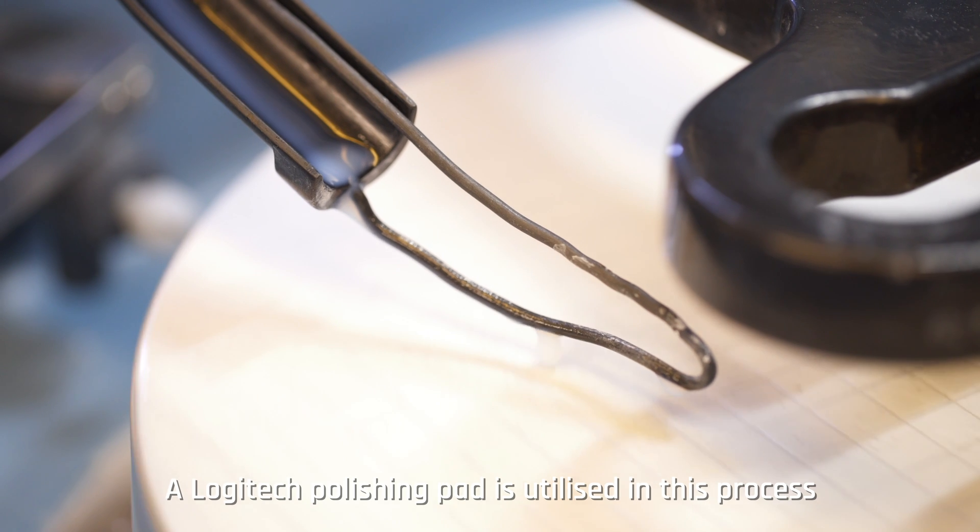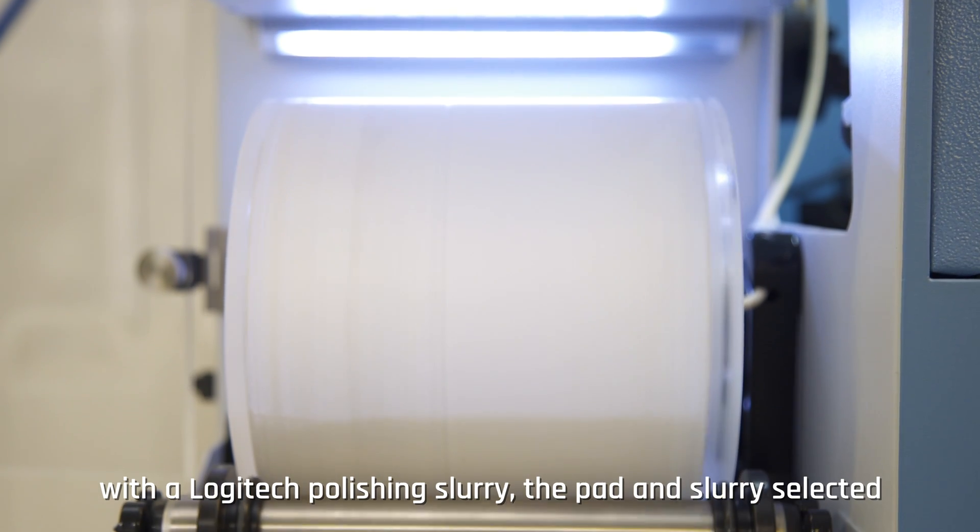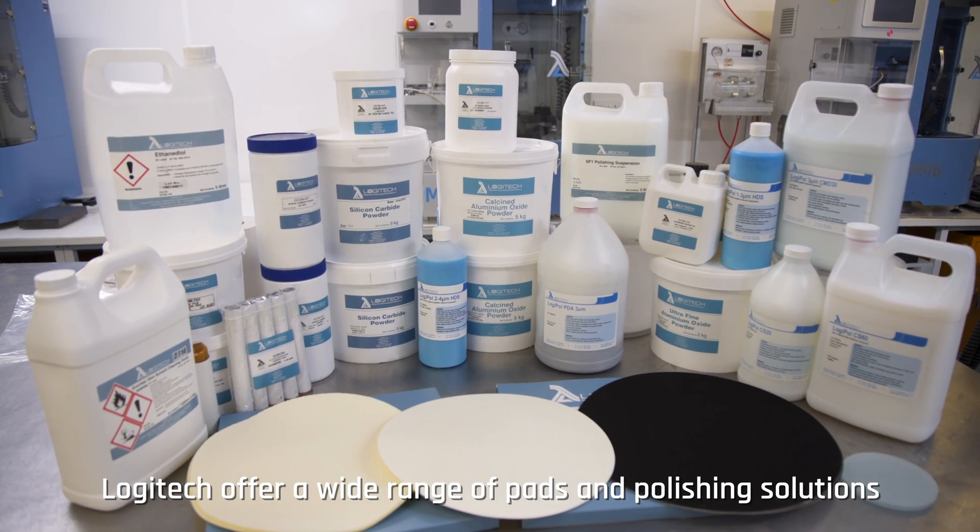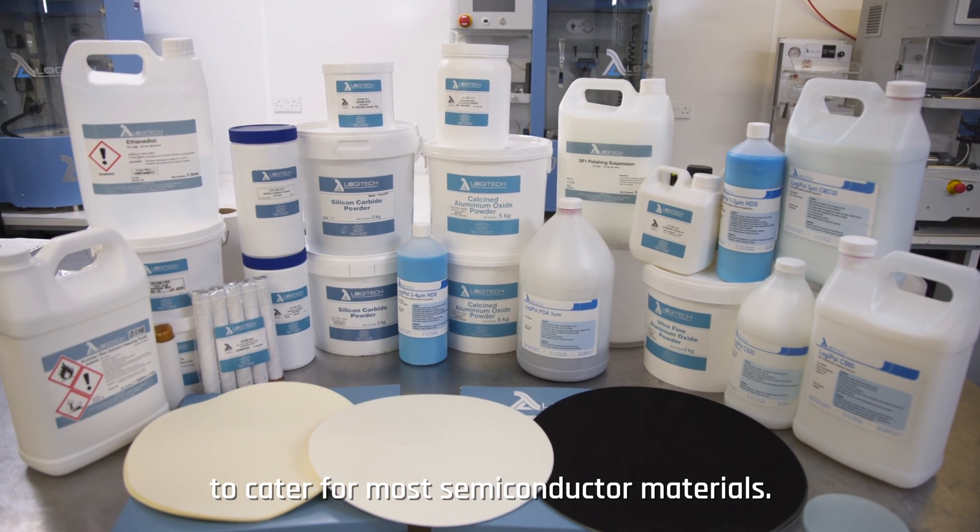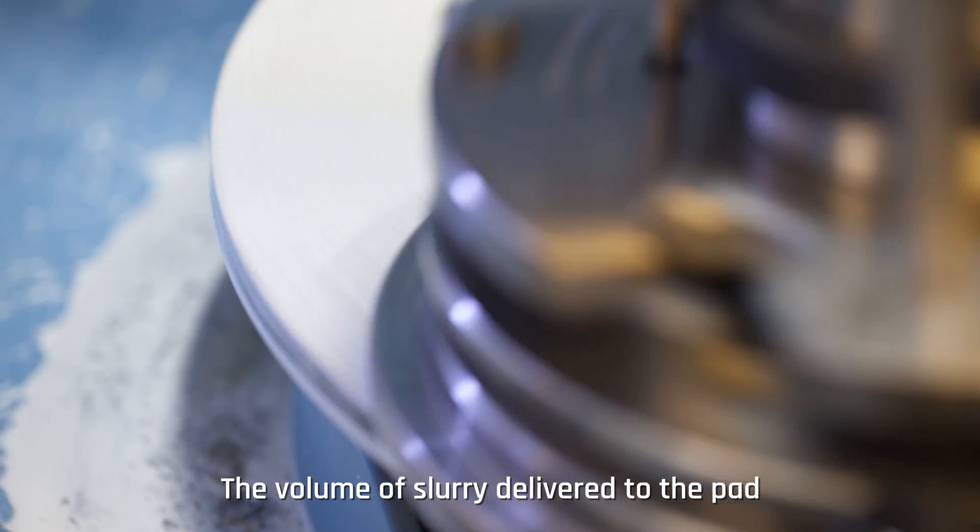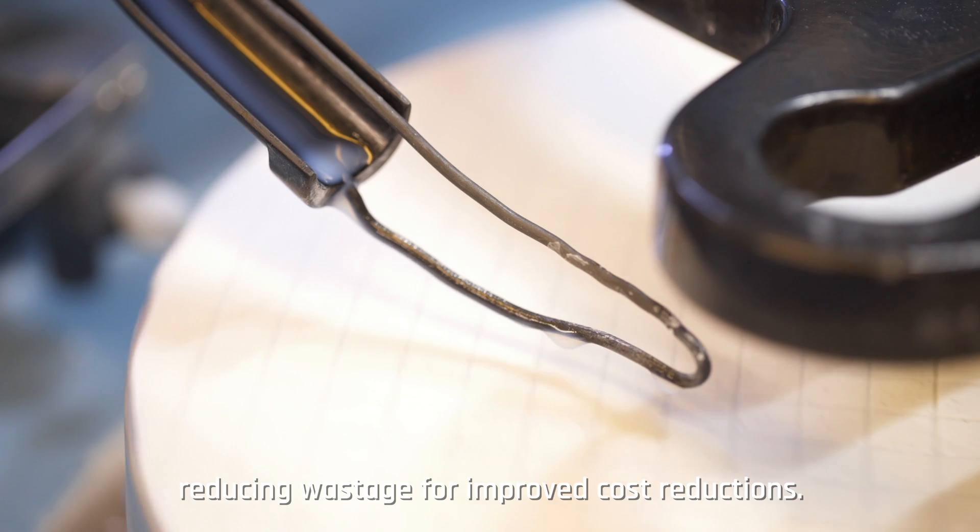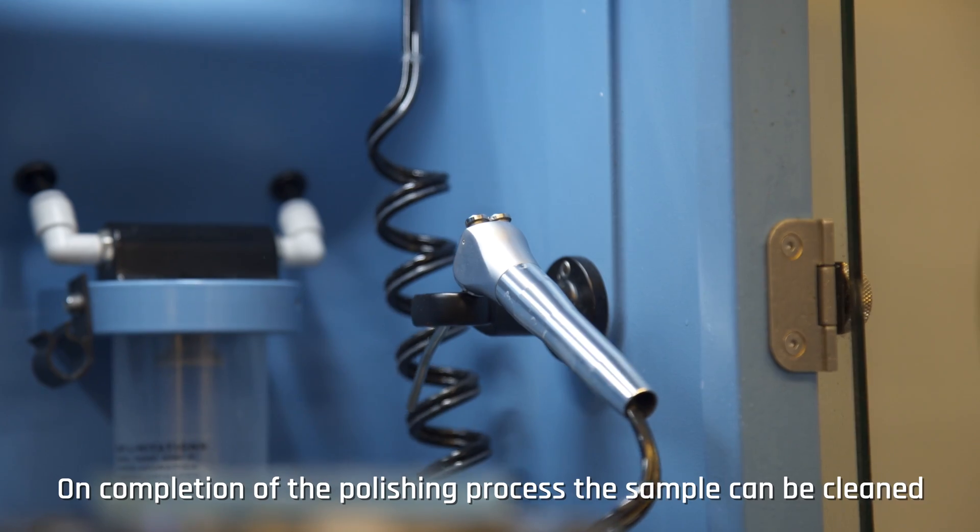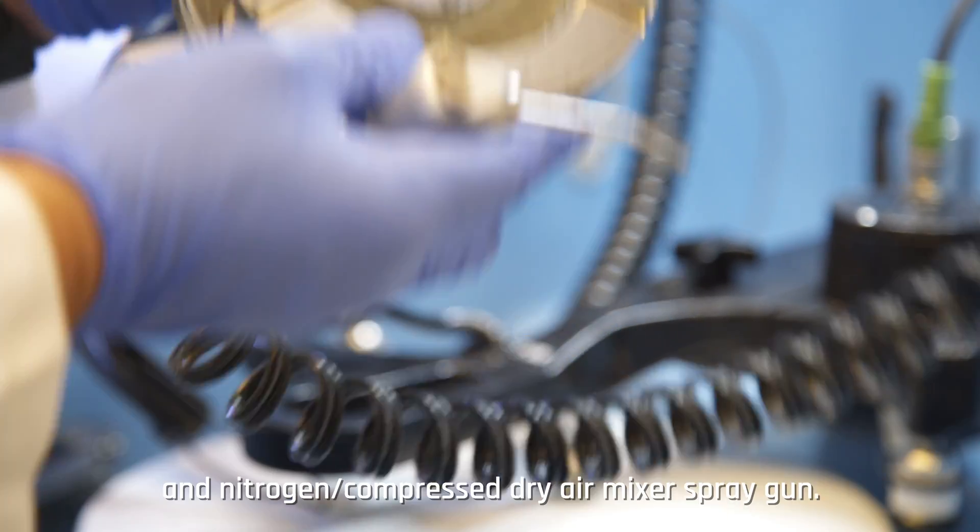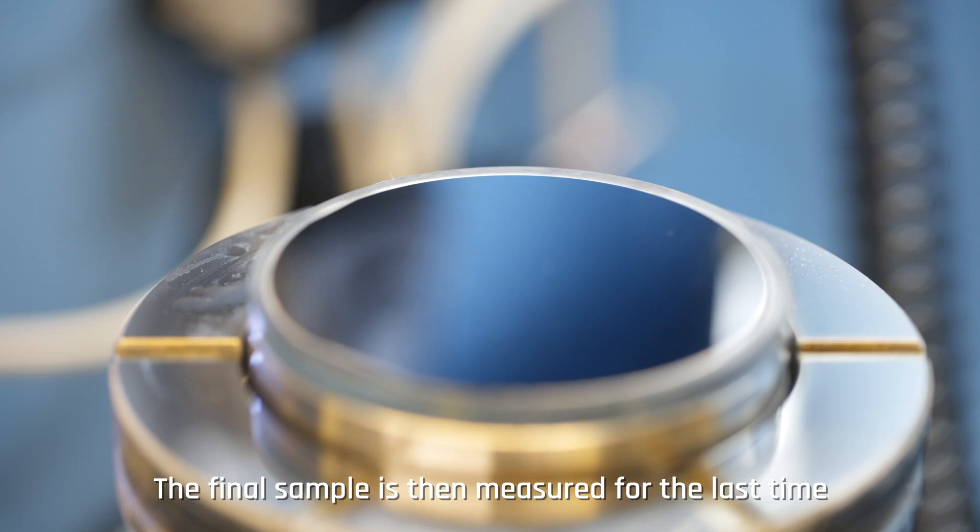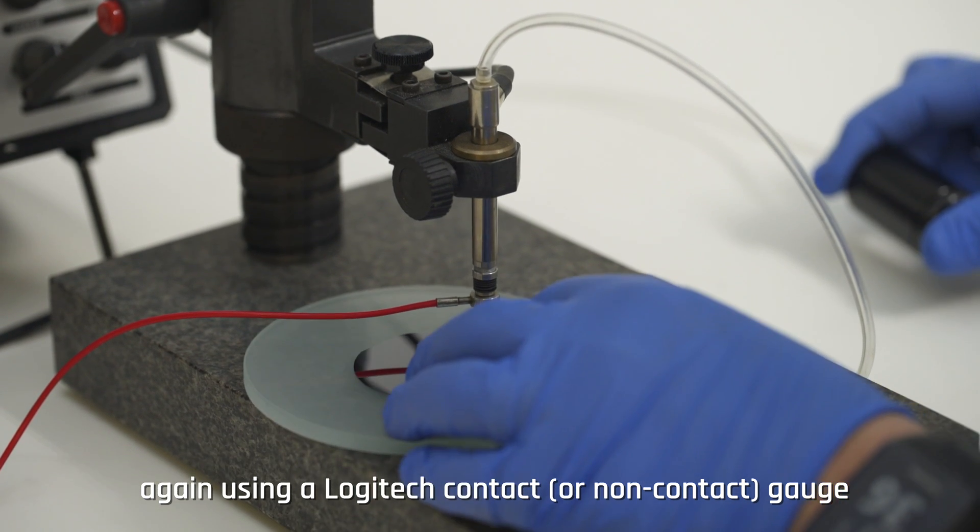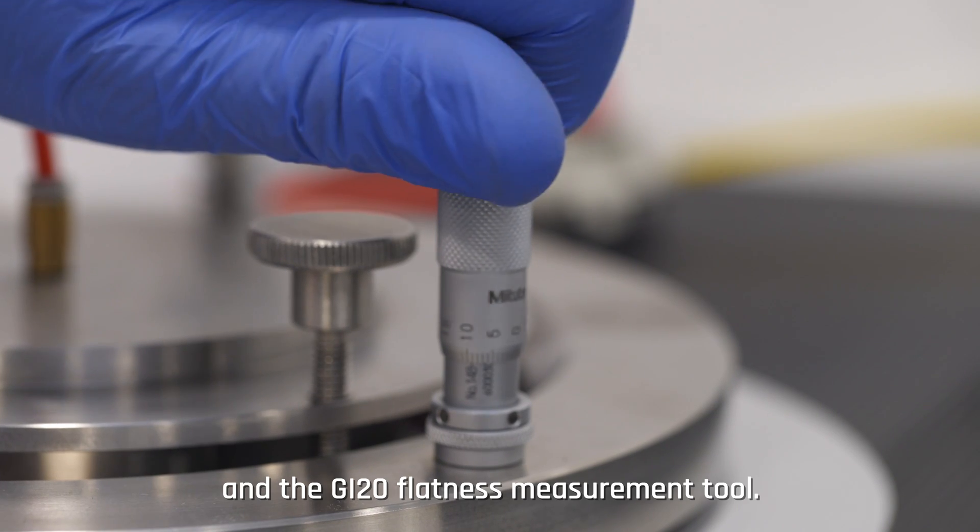A Logitech polishing pad is utilized in this process with a Logitech polishing slurry. The pad and slurry selected are dependent on the material being processed. Logitech offers a wide range of pads and polishing solutions to cater for most semiconductor materials. The volume of slurry delivered to the pad can be easily controlled via the GUI, reducing wastage for improved cost reductions. On completion of the polishing process, the sample can be cleaned in situ using the integrated deionized water and nitrogen compressed dry air mixer spray gun. The final sample is then measured for the last time again using a Logitech contact or non-contact gauge and the GI 20 flatness measurement tool.